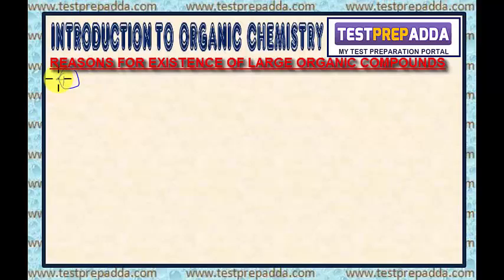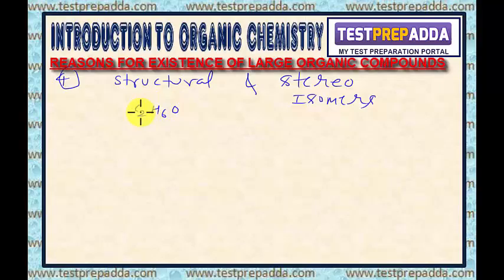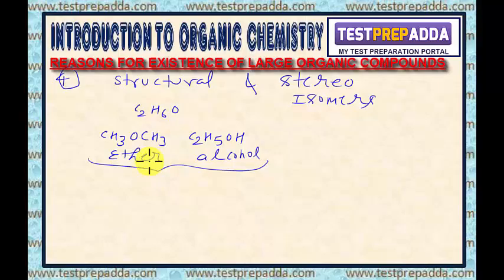The fourth reason is the existence of structural and stereo isomers. Structural isomers are compounds having the same molecular formula but different structures. For example, with the molecular formula C₂H₆O, I can write two different compounds: CH₃–O–CH₃, which is known as ether, and C₂H₅OH, which is known as alcohol. You can see two isomers with the same molecular formula but two different organic compounds.